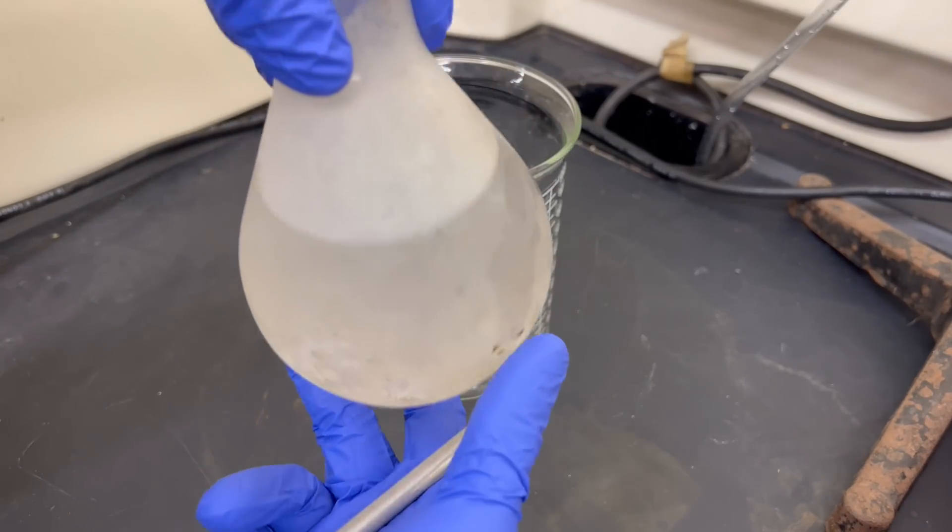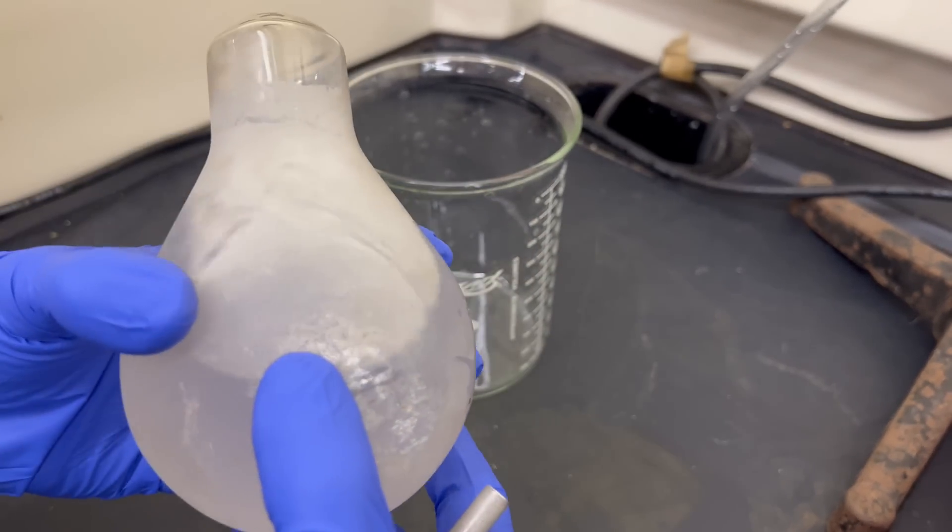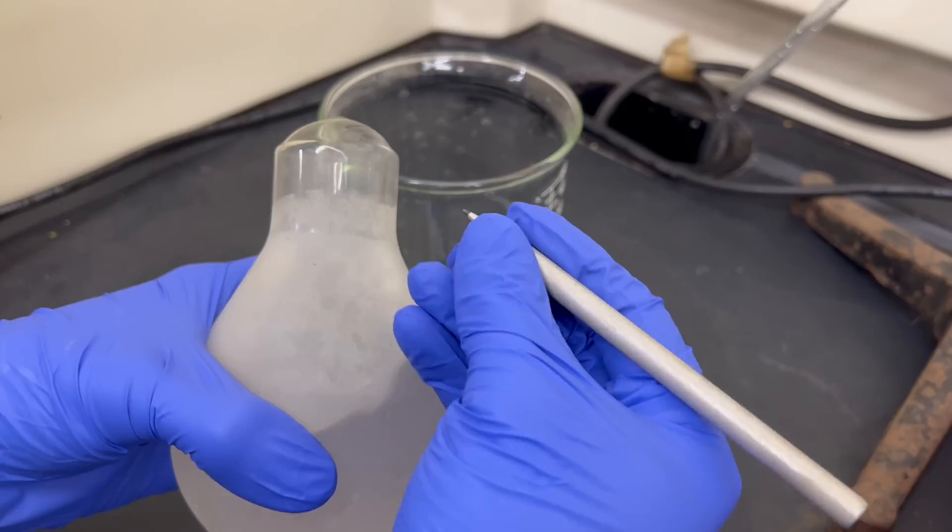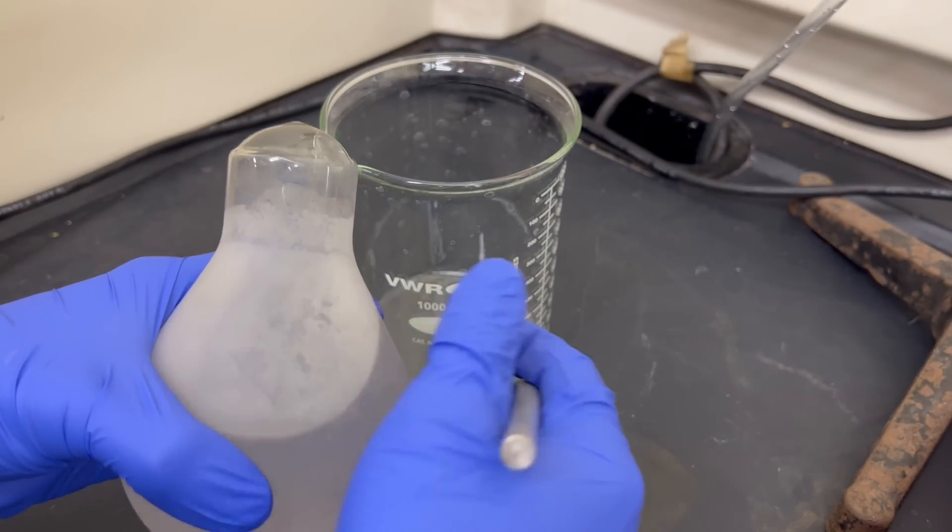These fire extinguisher grenades are made out of relatively thin glass, so my plan is to use a tungsten carbide knife and to score the top of it.